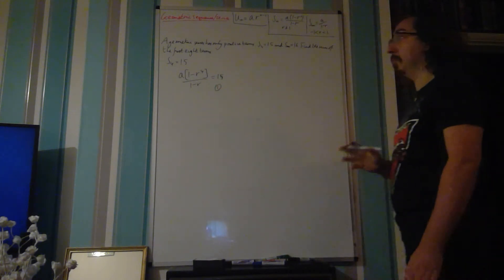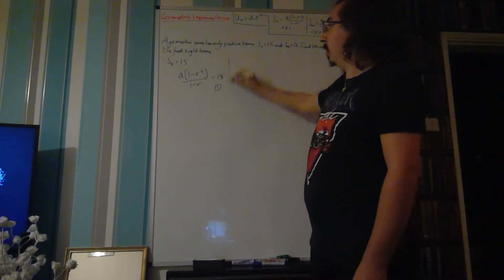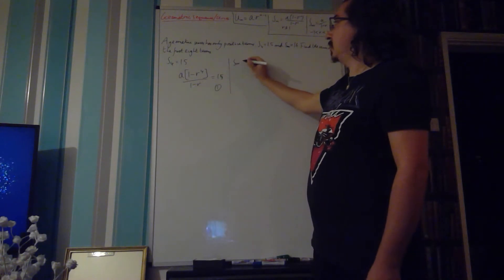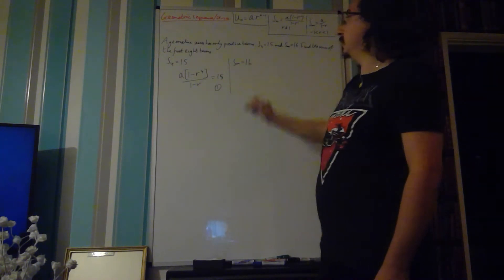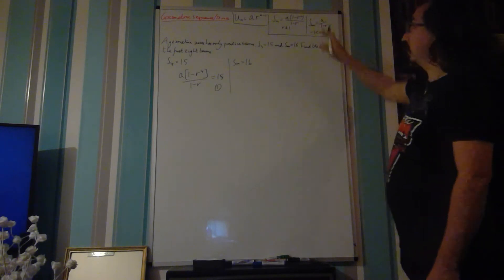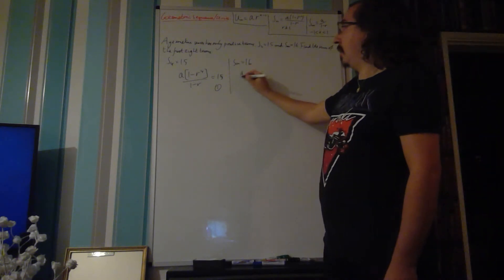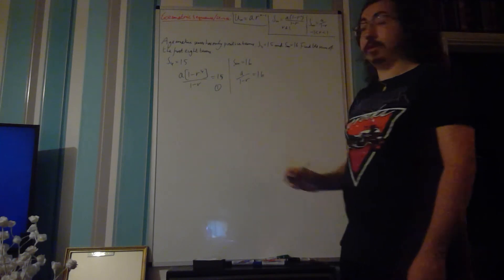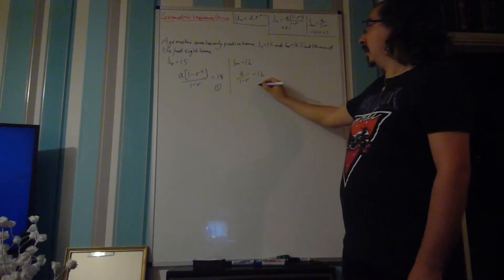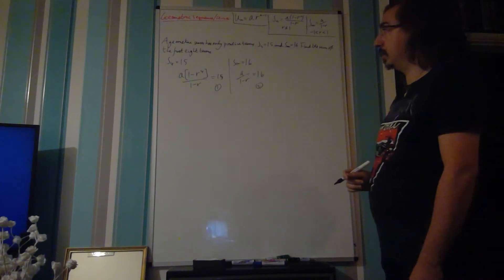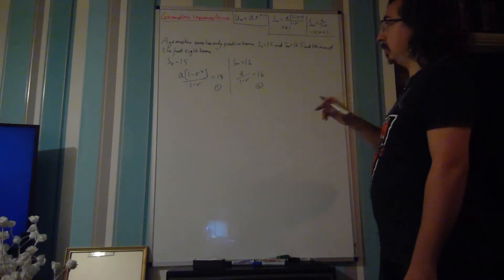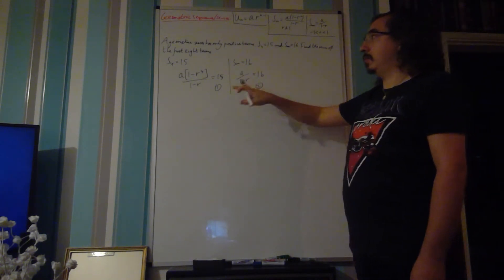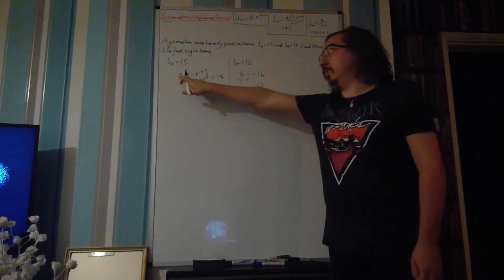We then have our sum to infinity which is equal to 16. The formula for this is a over 1 minus r equals 16. That is equation number 2. In the first equation we already have an a over 1 minus r, so we can replace that expression with 16 directly.